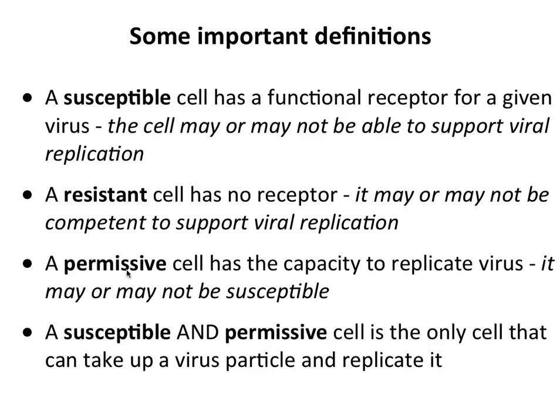The other important term is a permissive cell. A permissive cell has the capacity to replicate virus — it may or may not be susceptible. A susceptible and permissive cell is the only cell that can take up a virus particle and allow it to replicate. These are not obvious definitions; they're almost arbitrary — you could have reversed them. But this is what we have. And in fact, many virologists get this wrong — I've seen papers where they mix this up, unfortunately.